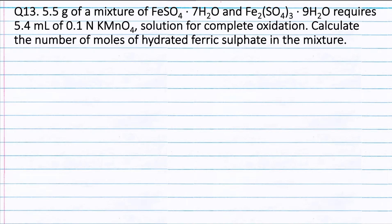Question 13. 5.5 grams of a mixture of FeSO4·7H2O and Fe2(SO4)3·9H2O requires 5.4 mL of 0.1N KMnO4 solution for complete oxidation. Calculate the number of moles of hydrated ferric sulphate in the mixture.